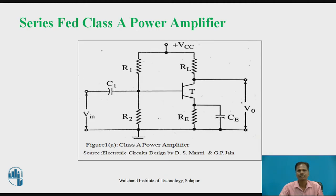Now let us see the first type of class A power amplifier, considering the way of connecting the output load to the collector circuit of the power transistor — that is, the series-fed class A power amplifier. The input low-level signal is applied at the base of the transistor, and the transistor is biased using DC power supply VCC and voltage divider R1, R2 with emitter resistance RE, such that the transistor operates all the time in the active region at the centre of the load line. The output load with load resistance RL is directly connected in the collector circuit of the transistor, so load resistance RL comes in series with the collector and emitter. The output is taken from the collector, which is why this amplifier is called a series-fed class A power amplifier.